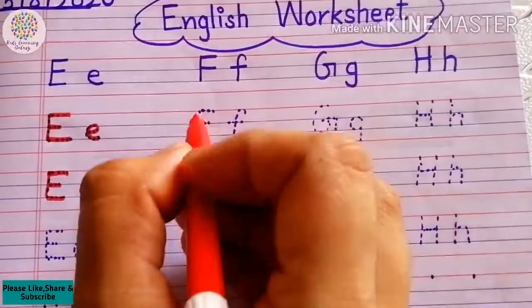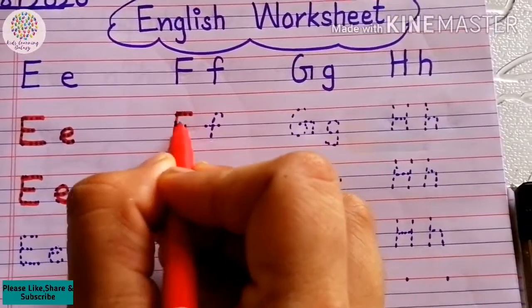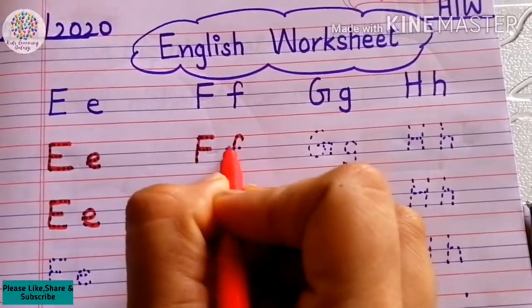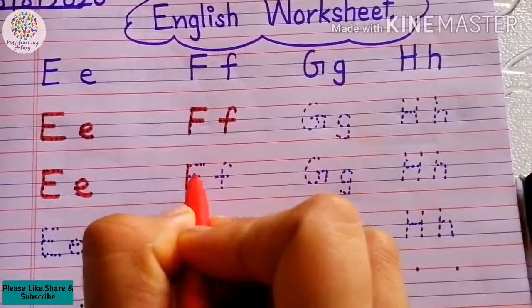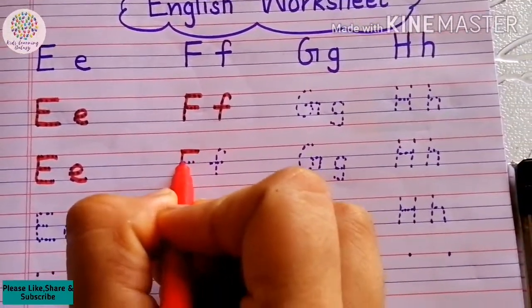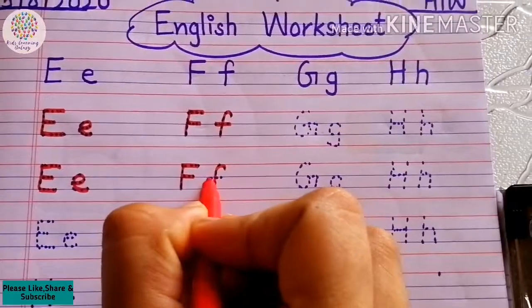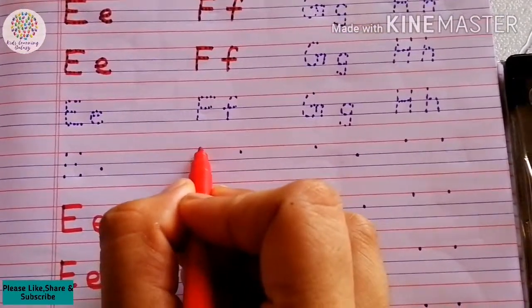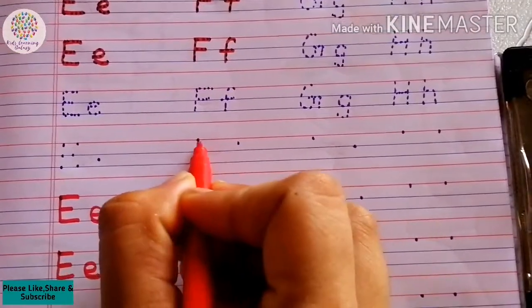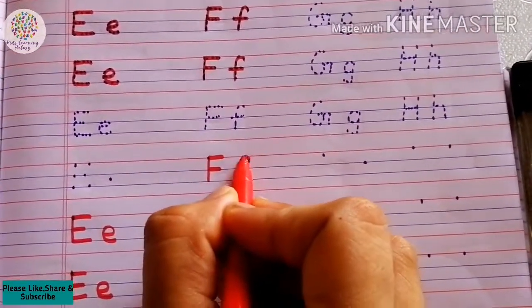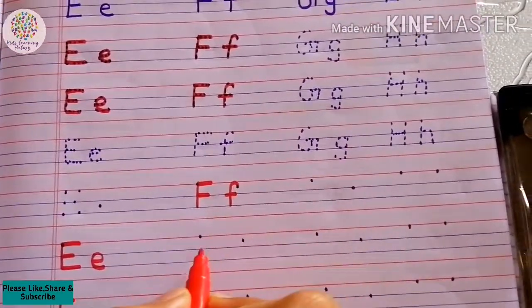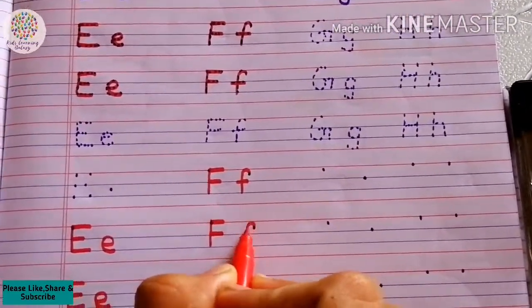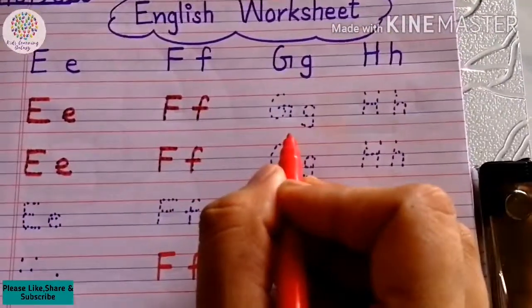Now come to Mama F. Mama F is capital F, Baby F is small f. Now on single dot — Mama F, Baby F, Mama F, Baby F.